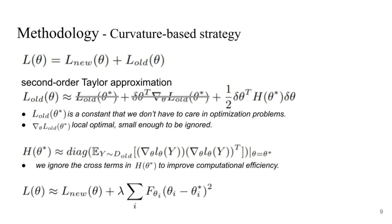F_theta_i is the diagonal element of the Hessian matrix at theta star. The intuitive interpretation of F_theta_i is the local curvature, which indicates the sensitivity that affects the performance of the previous acoustic environment.